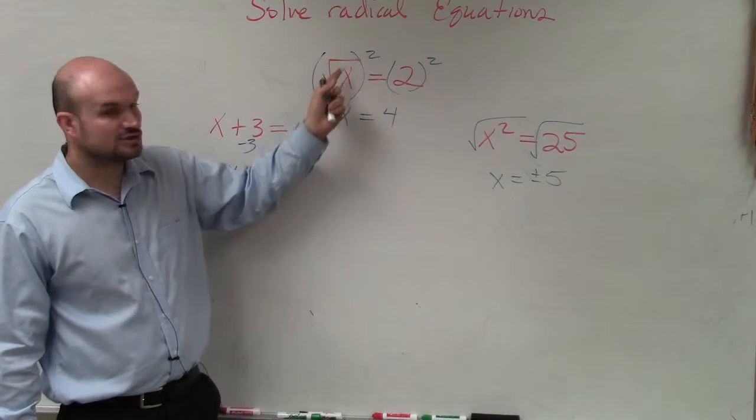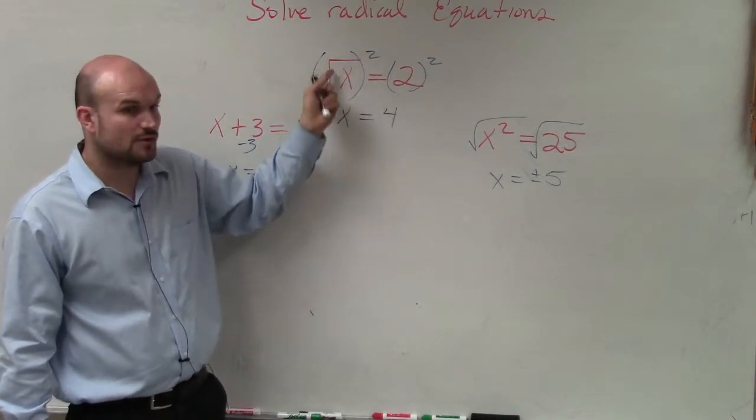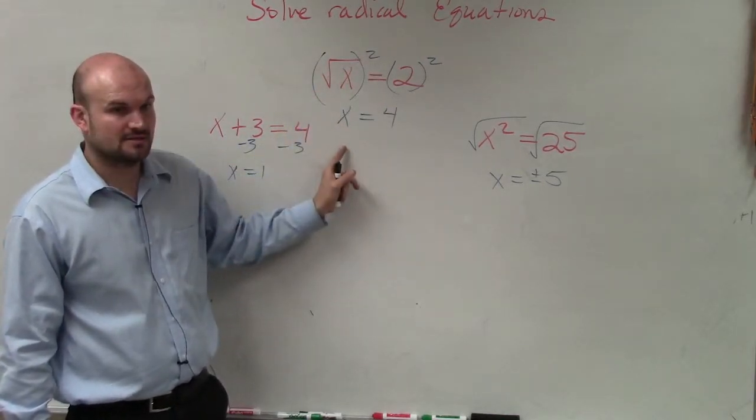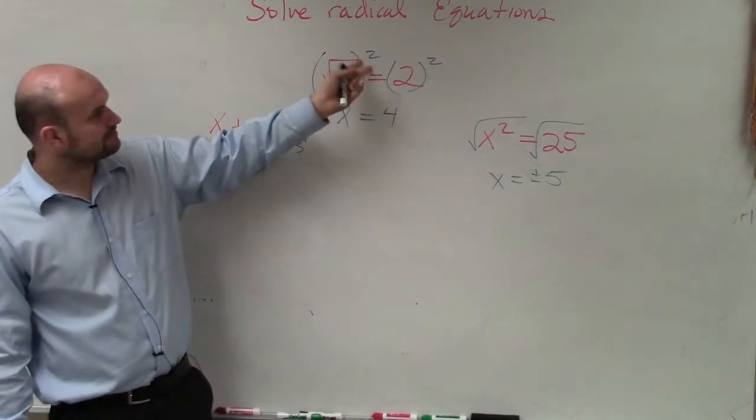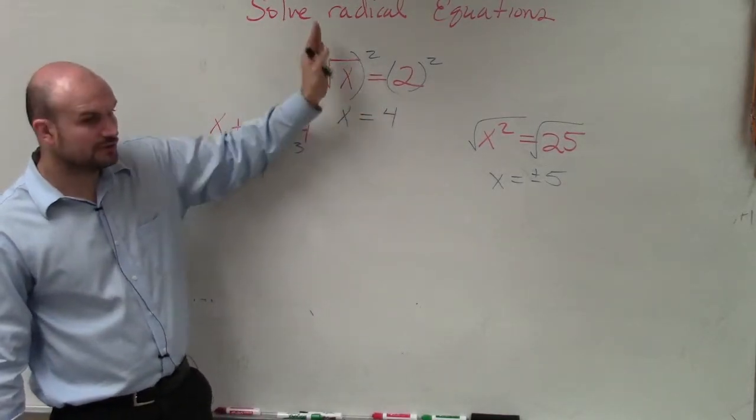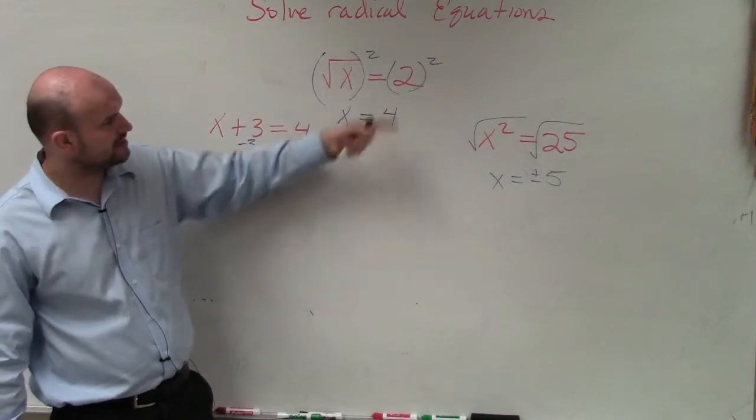square root of x squared is just x, right? So the squaring of square root of x is just going to be x. Does that make sense? So because squaring and square root undo each other, we're just left with x.